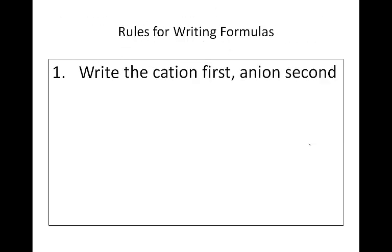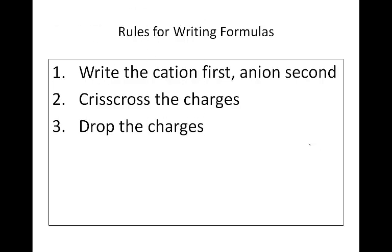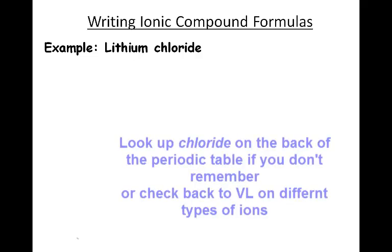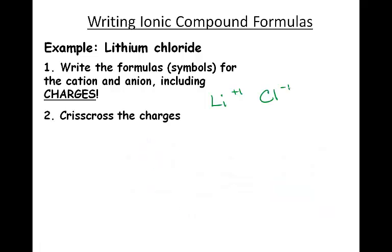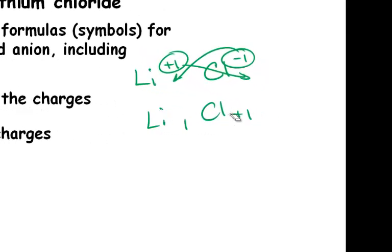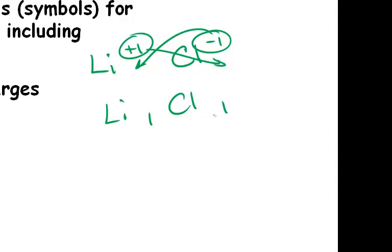Remember your rules for writing ionic formulas: write the cation first, anion second; crisscross the charges; drop the positive and negative signs; then reduce. Let's practice. Lithium chloride: lithium forms a positive one, chloride forms a negative one. Crisscross: Li with a negative one, Cl with a positive one. Drop the charges and reduce — Li1Cl1 reduces to LiCl.